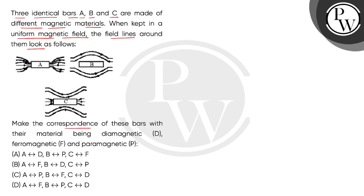Make the correspondence of these bars with their material being diamagnetic D, ferromagnetic F and paramagnetic P. So children, given we have three identical bars which we have named A, B and C. Now they are made of three magnetic substances such as ferromagnetic, diamagnetic and paramagnetic.